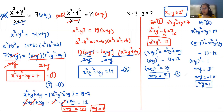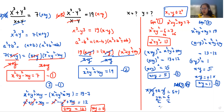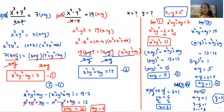I'm considering x plus y equals 5 as equation 3 and x minus y equals 1 as equation 4. Adding equations 3 and 4: x plus y plus x minus y equals 5 plus 1, so the y terms cancel and 2x equals 6. Dividing both sides by 2, x equals 3. Putting x equals 3 into equation 4: 3 minus y equals 1, so y equals 2. The final values are x equals 3 and y equals 2.